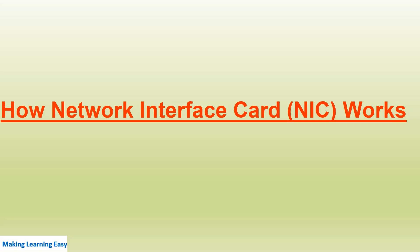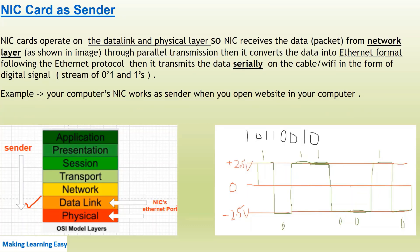Now let's see how the Network Interface Card works. I have divided NIC card working into two parts: when the NIC card works as a sender, and when the NIC card works as a receiver. NIC cards operate on the Data Link and Physical layers. The NIC receives the data or packet from the Network Layer.